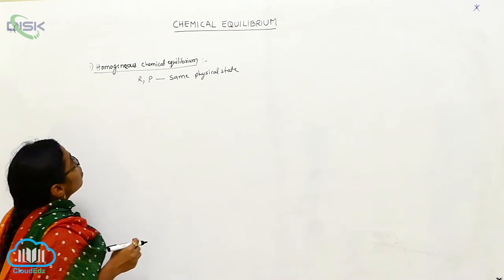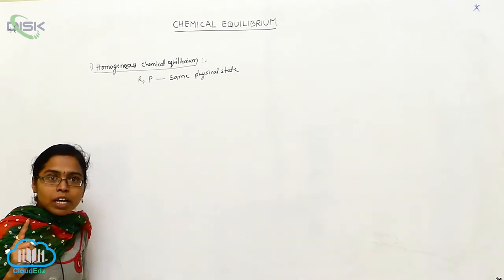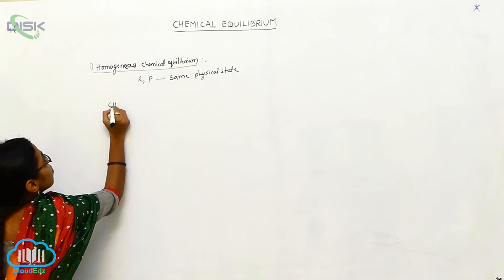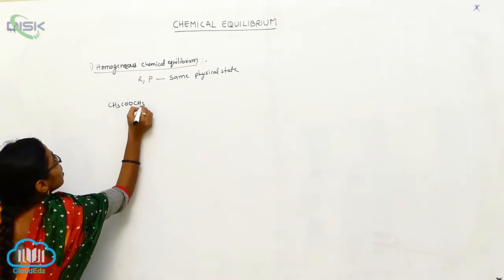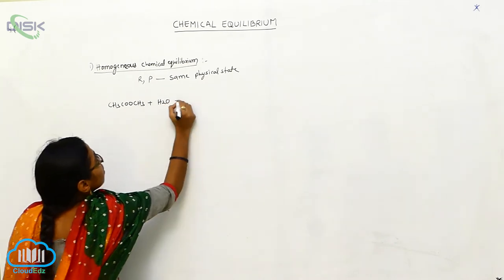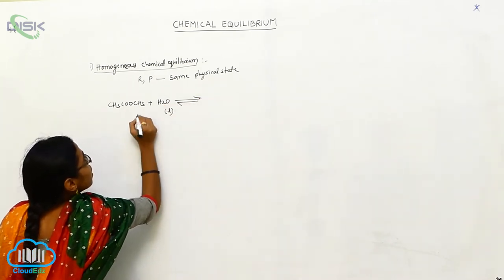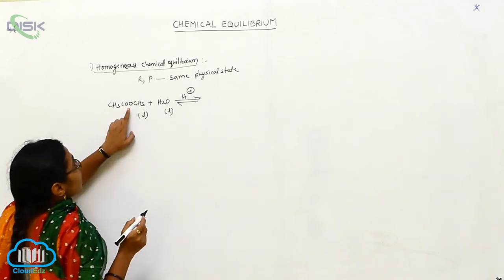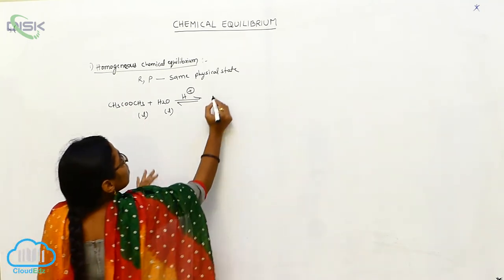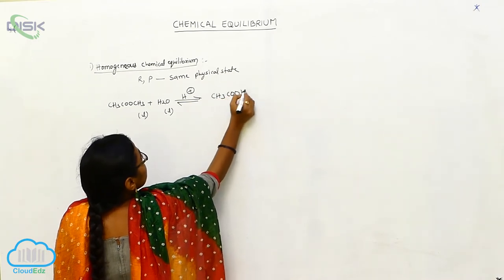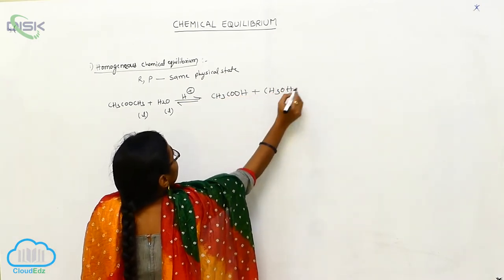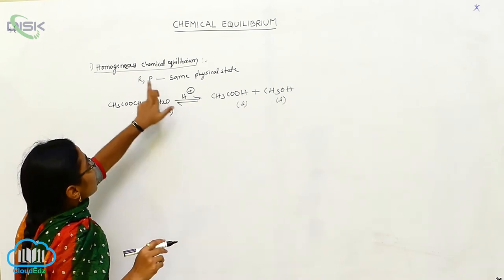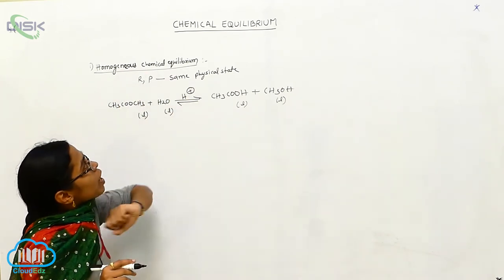Example for homogeneous chemical equilibrium: I am taking the organic compound methyl acetate. The formula of methyl acetate is CH₃COOCH₃, and it reacts with water. Both are present in the liquid state. The products are acetic acid and methyl alcohol, also in the liquid state. Since all species are in the same physical state, this is called homogeneous chemical equilibrium.